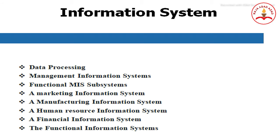Data processing involves electronic data processing (EDP) — the use of computer technology to perform an organization's transaction-oriented data processing. Management information systems (MIS) describe the use of computer technology to provide decision-oriented information to managers. MIS provides a wide variety of information beyond that associated with data processing in the organization.